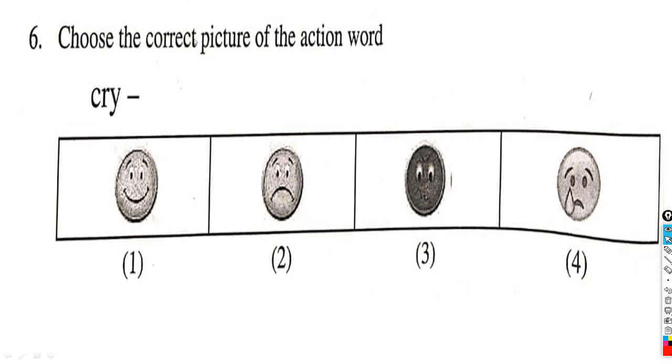Question number 6: Choose the correct picture of the action word 'cry.' First option is not cry, it's smile. Second one is sad. Third one is angry. And fourth one is cry. So the correct option is option number 4.